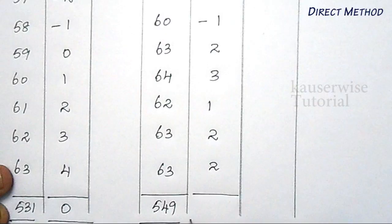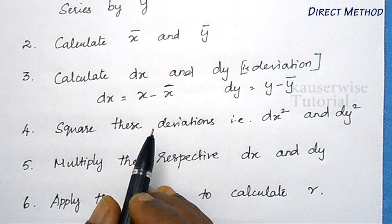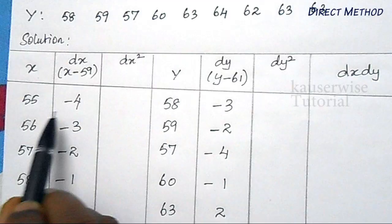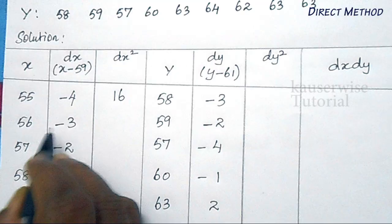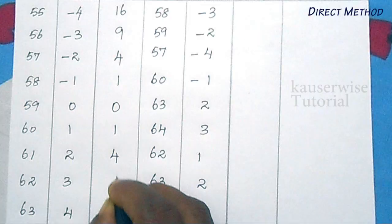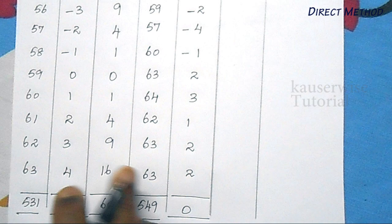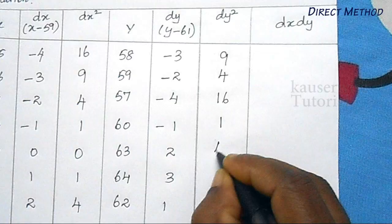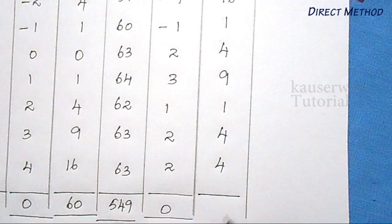Now see step 4: after finding dx and dy deviations, the next step is to square these deviations, that is dx² and dy². For dx: −4 × −4 = +16, −3 × −3 = 9, and similarly 4, 1, 0, 1, 4, 9, 16. The total for dx² is 60. In the same way, square dy: −3 × −3 = 9, 4, 16, 1, 4, 9, 1, 4, 4. The total for dy² is 52.